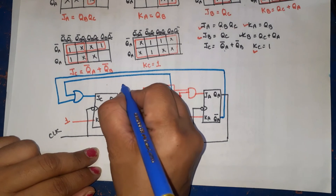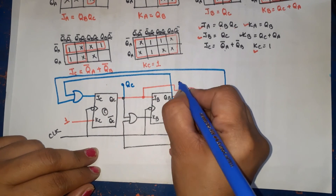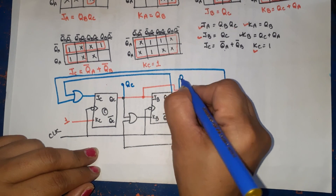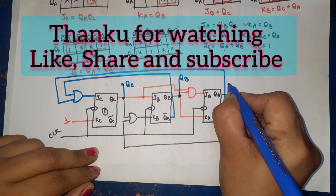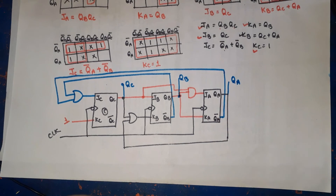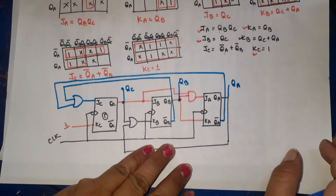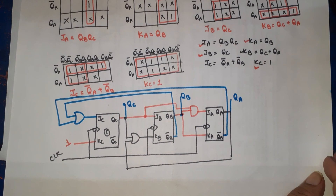This is the complete circuit. The outputs are QC, QB, and QA. This is the mod-7 synchronous counter using JK flip-flops. If you have any doubts, please write in the comment section. Thank you so much.